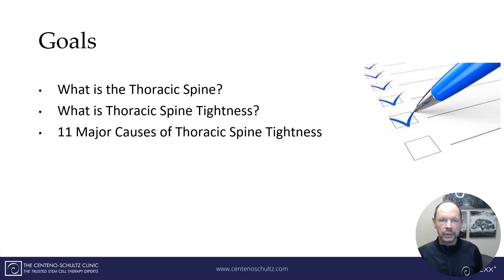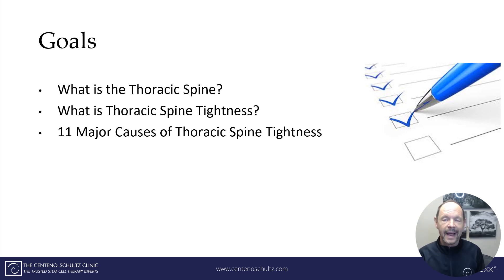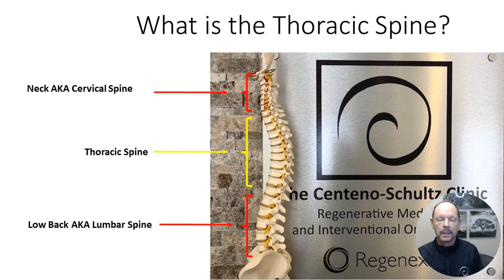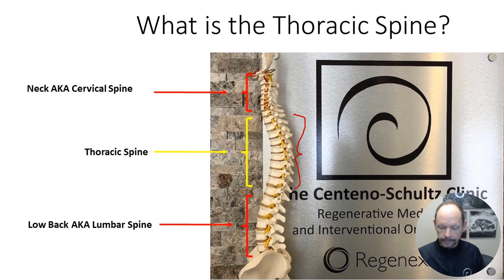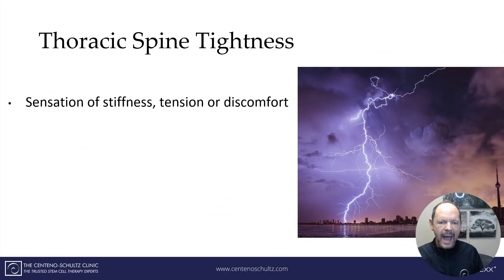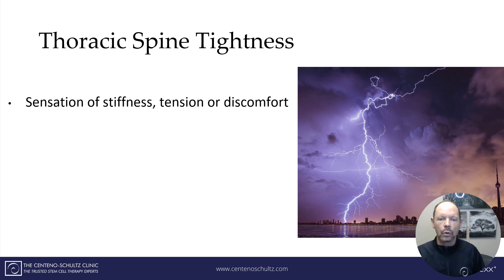The goals of this short presentation include: what in the world is the thoracic spine, what is thoracic spine tightness, and what are the 11 major causes that you need to know about. The thoracic spine is that section of the spine below the neck and above the low back — some people call it the mid-back. Thoracic spine tightness is basically the sensation of stiffness, tension, or discomfort.